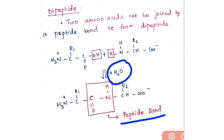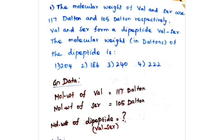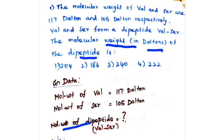Now let's see the first problem. The molecular weight of valine is 117 daltons and the molecular weight of serine is 105 daltons. Valine and serine form a dipeptide — valine-serine. You need to find the molecular weight of this dipeptide in daltons.